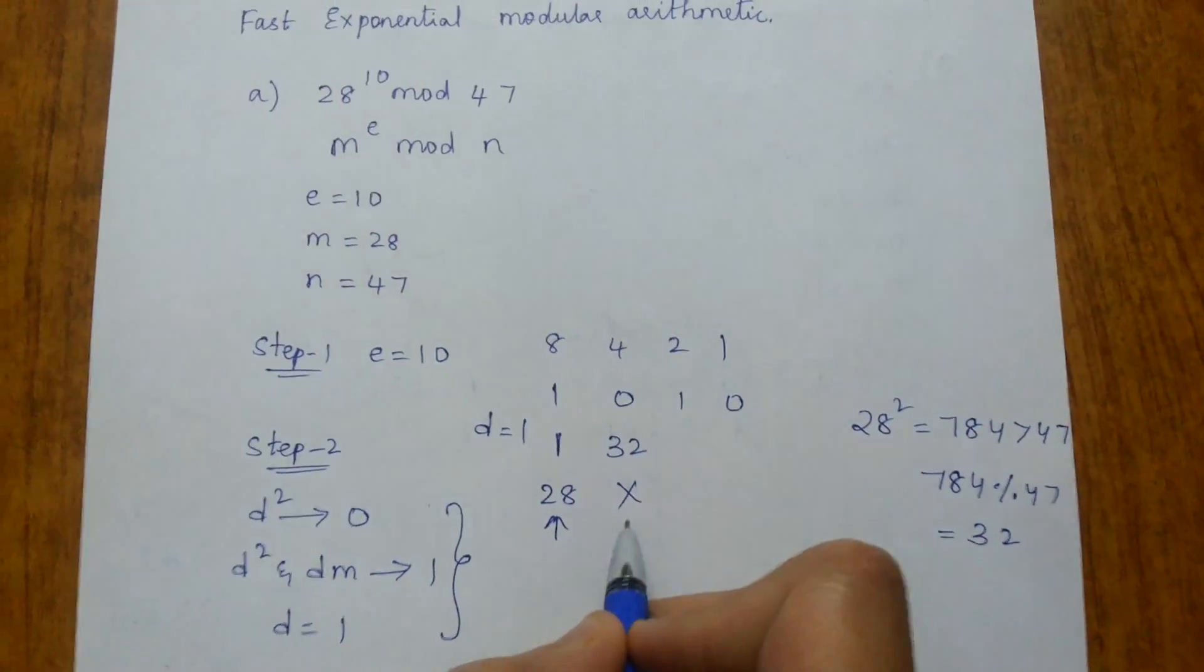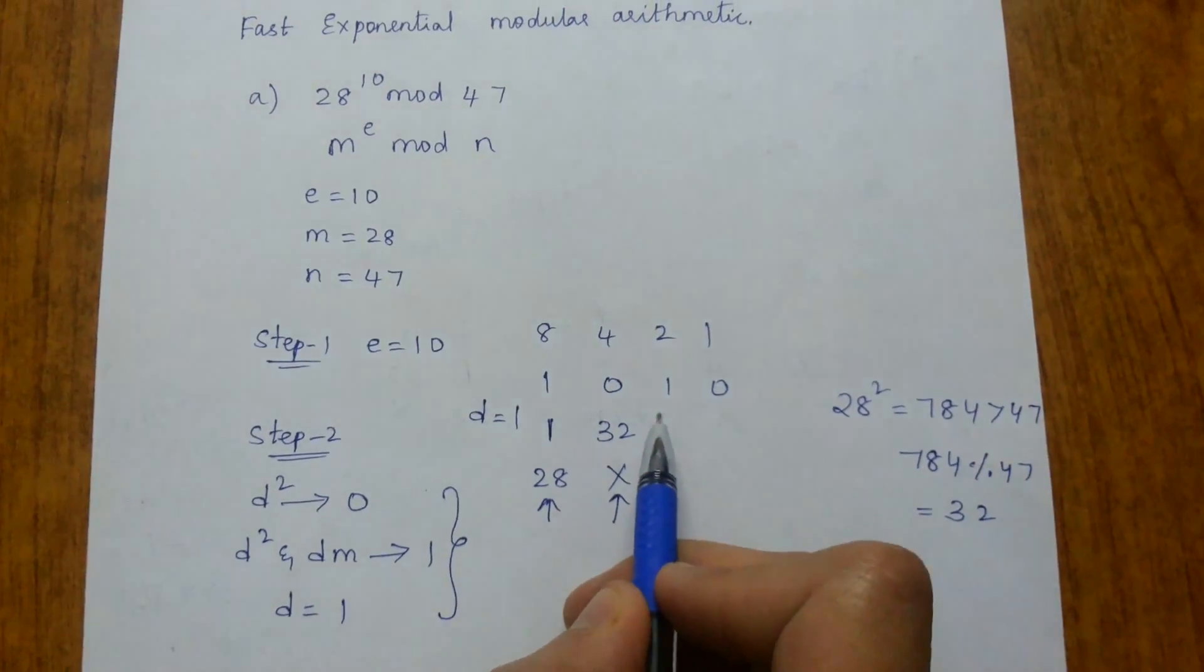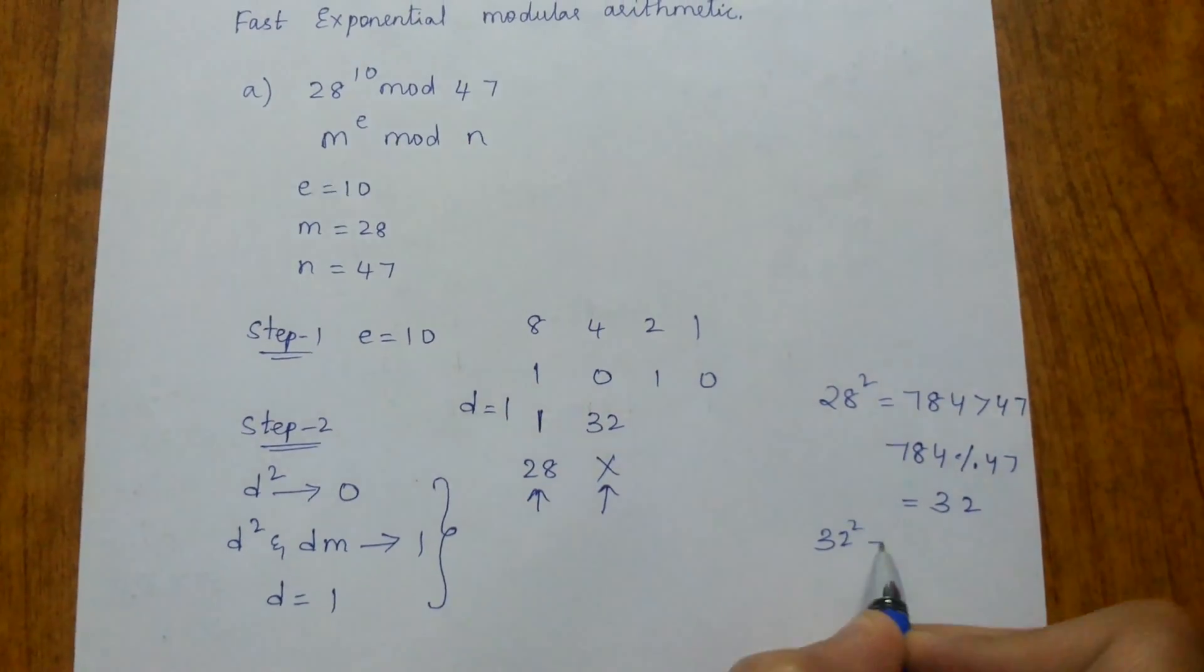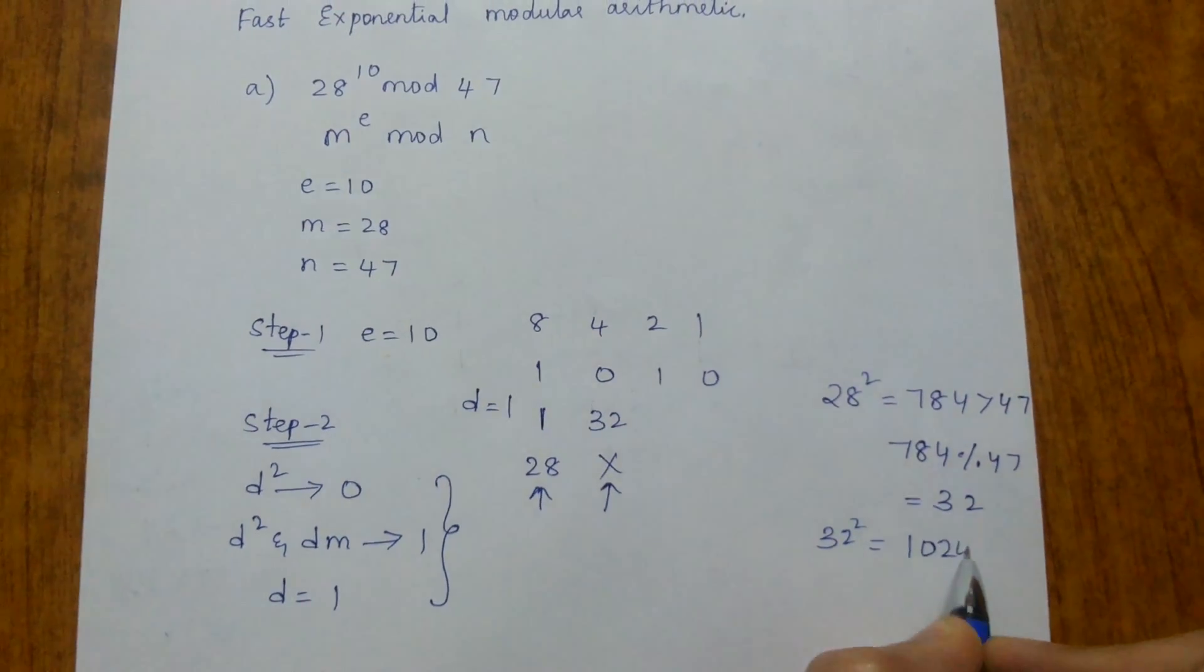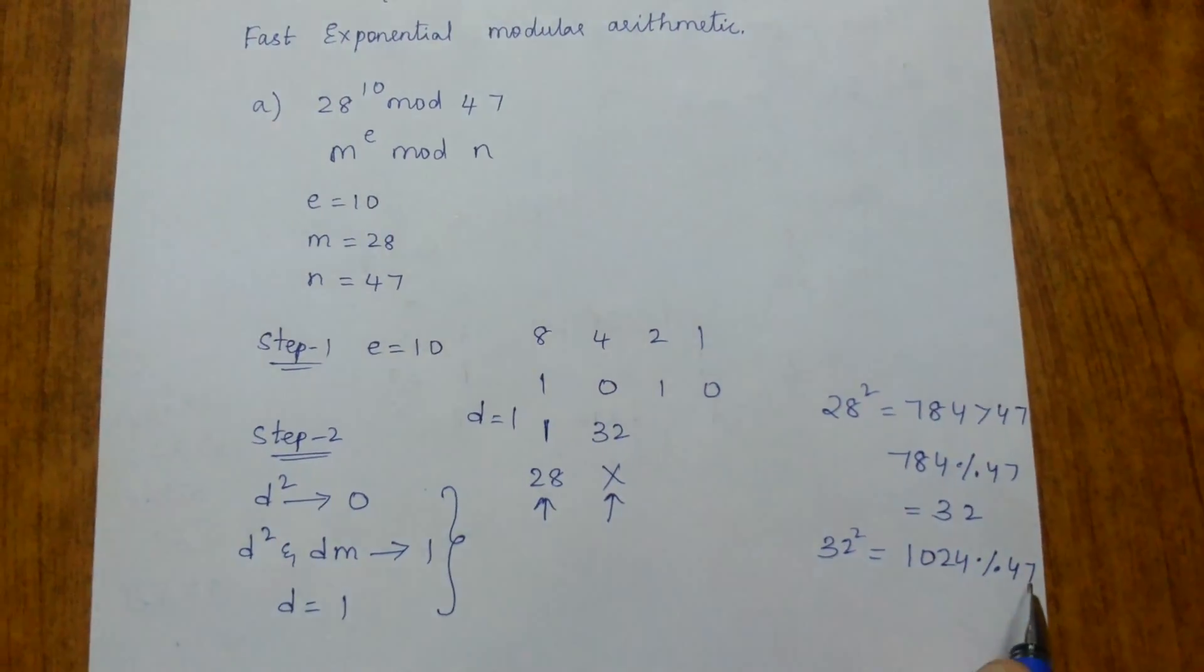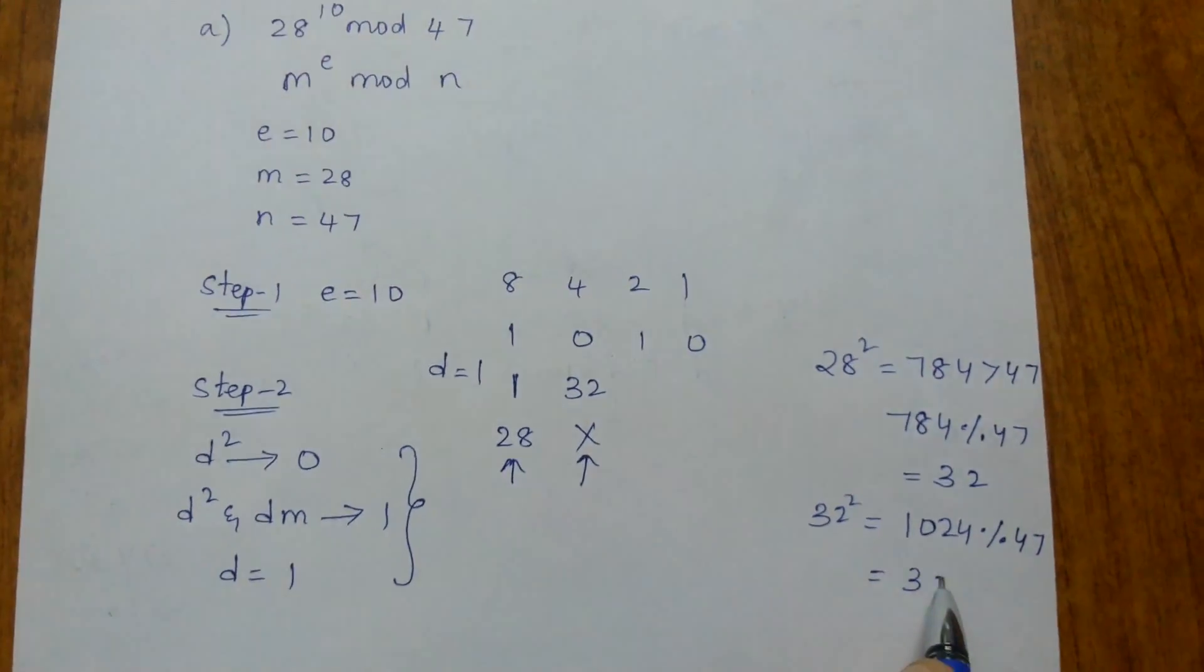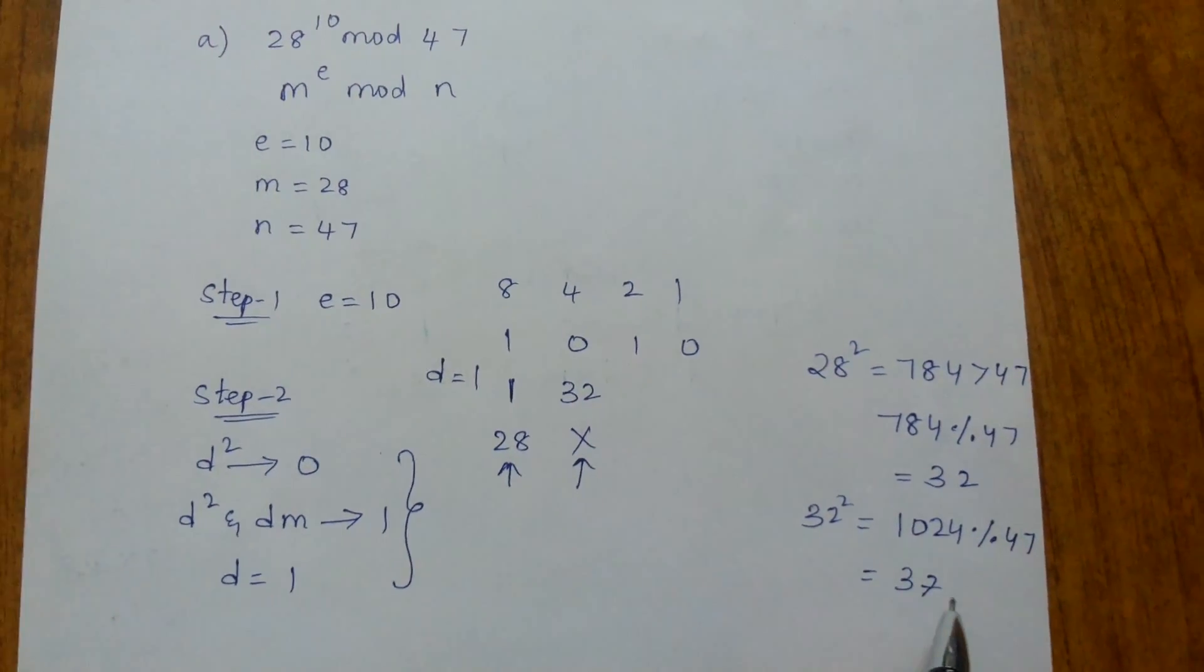Now again 1. The present value of d is 32. We perform both d² and dm operations. 32² is 1024. You can calculate the modulus: 1024 mod 47, which is 37.